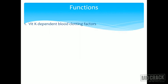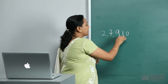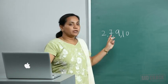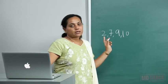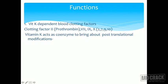The primary function of Vitamin K is to help in coagulation. There are vitamin K-dependent blood clotting factors: factors 2, 7, 9, and 10 — always remember these numbers. Clotting factor 2 is prothrombin. Vitamin K acts as a coenzyme and brings about post-translational modification of these clotting factors, which are proteins.